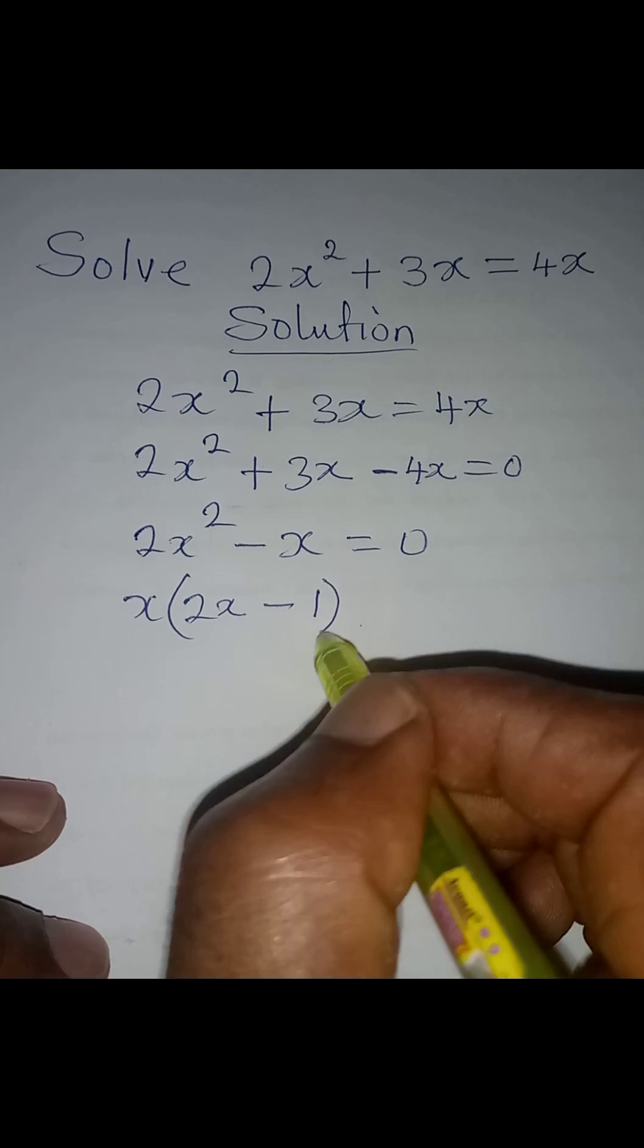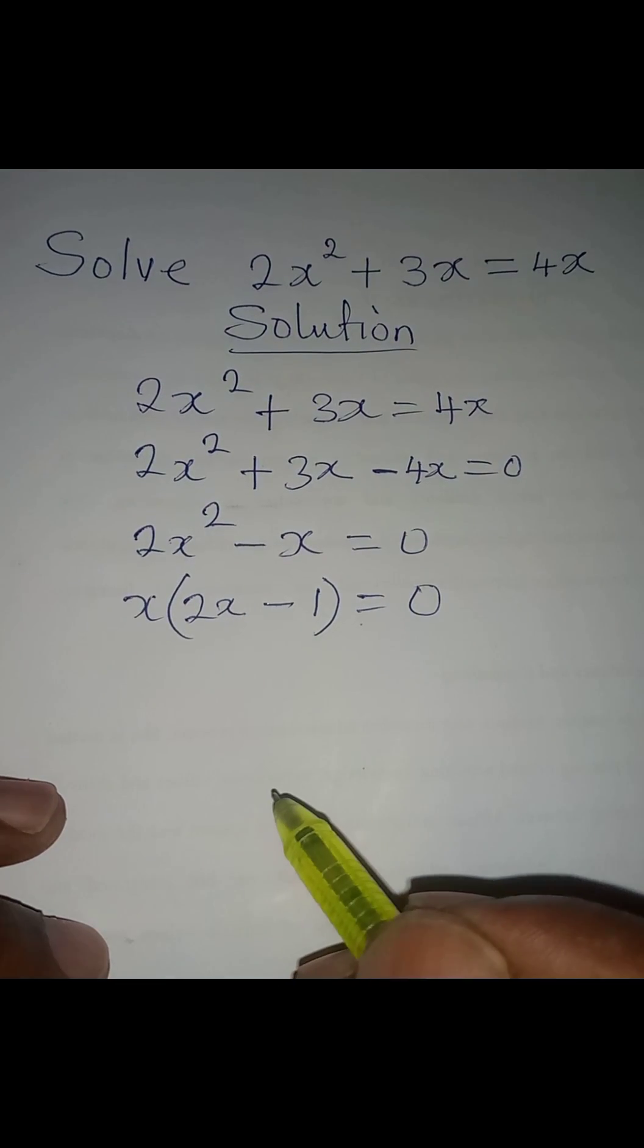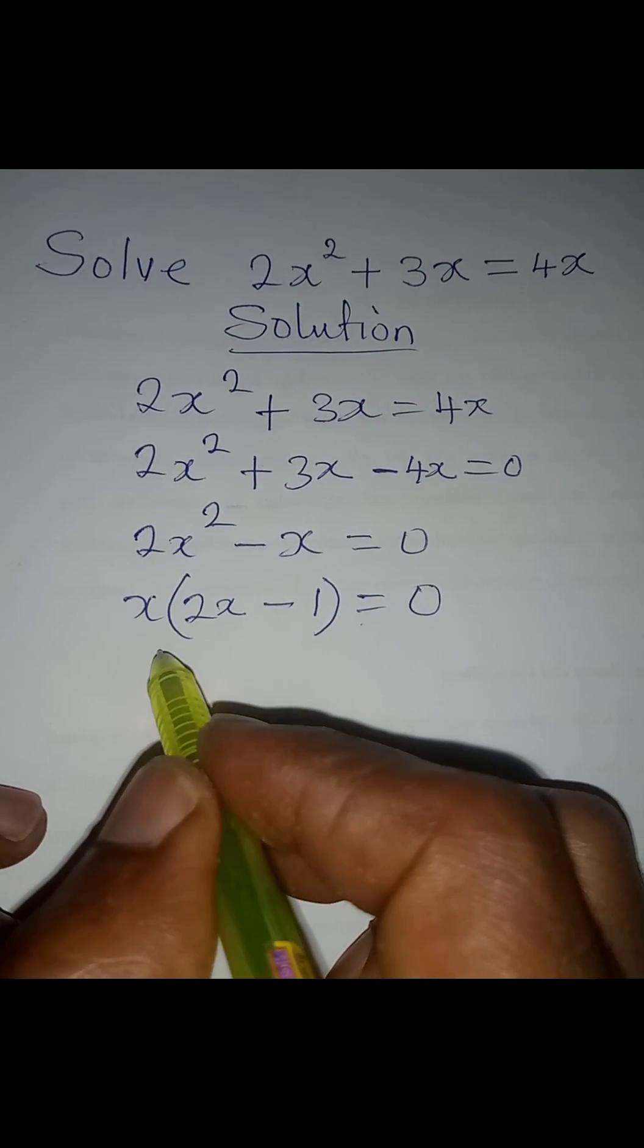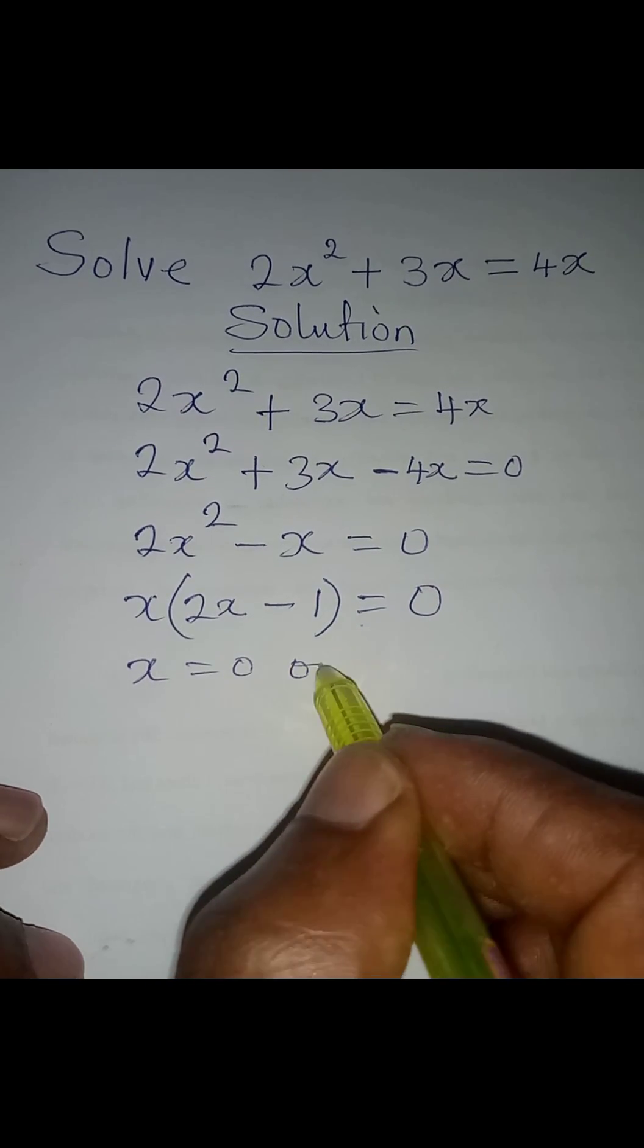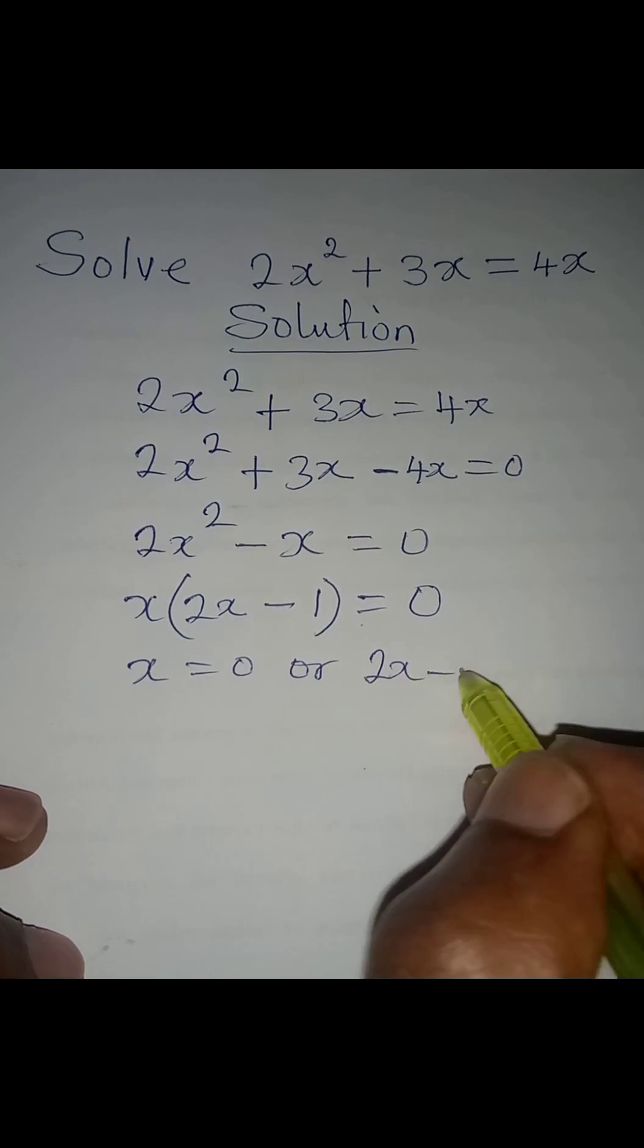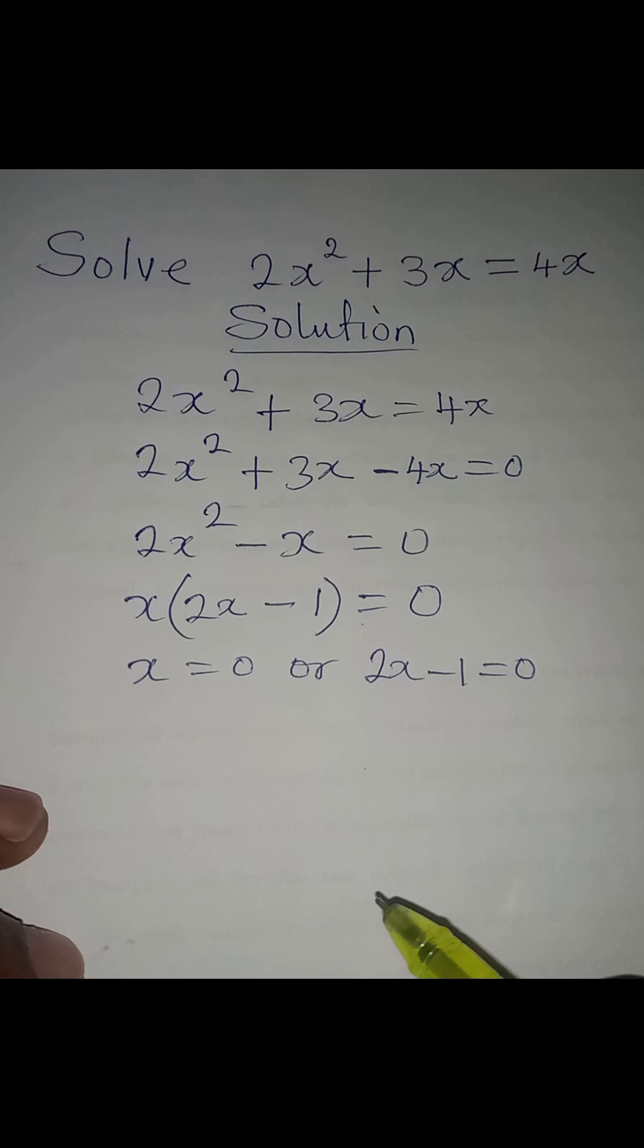Then from here, it is either x = 0 or 2x - 1 = 0.